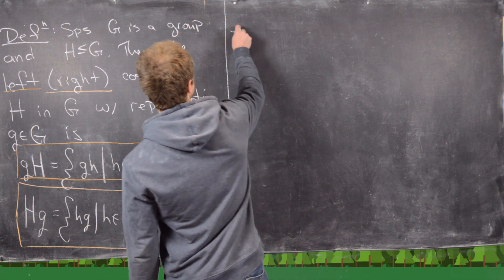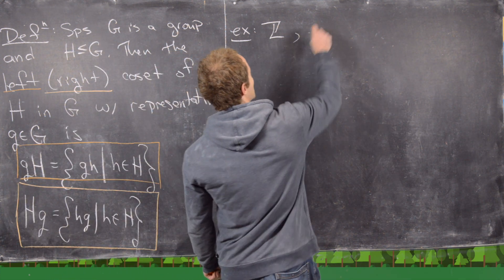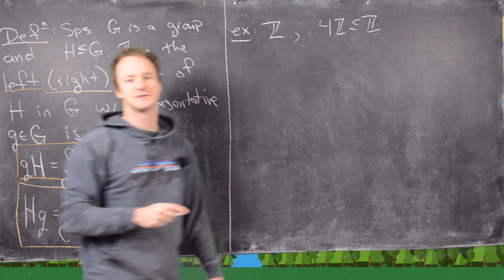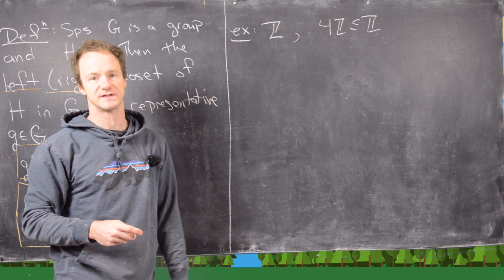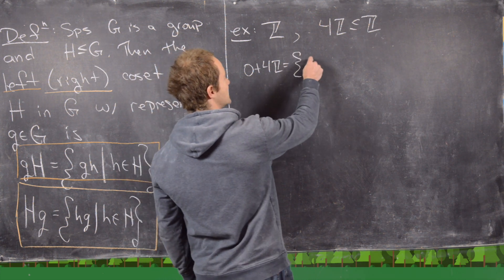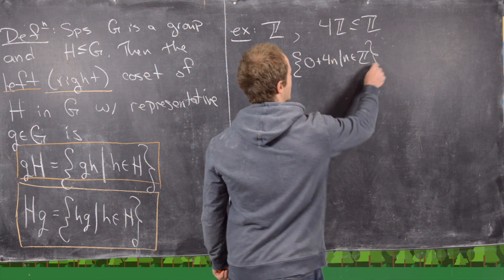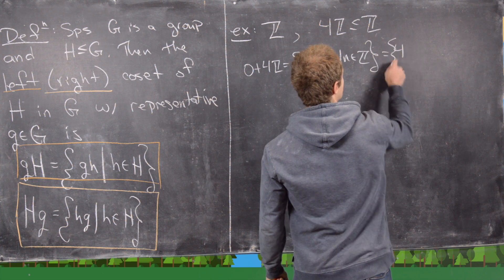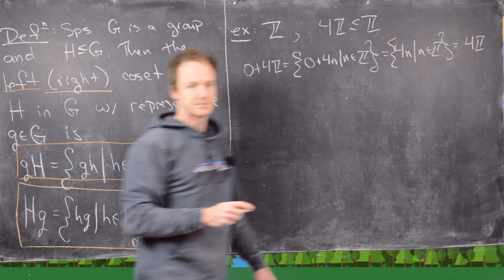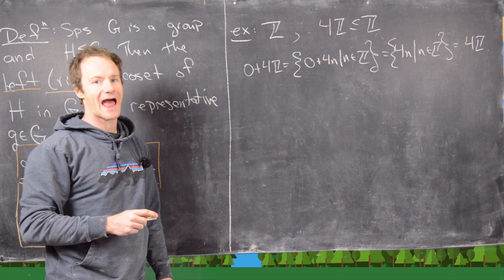Let's look at some examples. Let our group be Z and our subgroup be 4Z. In a previous video we proved that all subgroups of Z are of the form nZ, so here let's take 4Z. Now let's look at 0 + 4Z. This equals 0 + 4n as n runs through all of Z, which is just 4n as n runs through Z, or simply 4Z itself. That's the coset of 0.